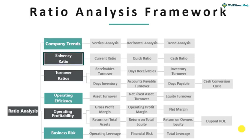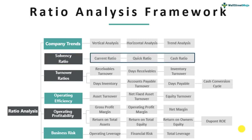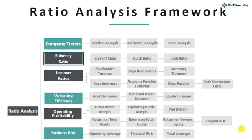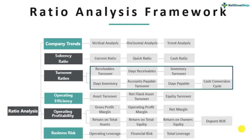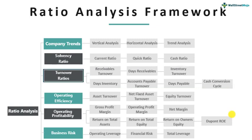Solvency ratios and turnover ratios are used to understand how the company is in terms of its assets vis-a-vis liabilities from the point of view of short term — whether the current assets or short-term assets are large enough to ensure that short-term liabilities can be paid for. Turnover ratios primarily look at how fast the company is able to convert inventory into finished goods, sell it to customers and receive cash from them.